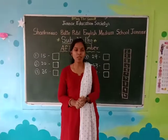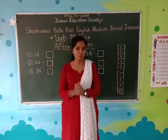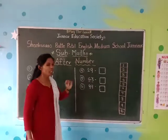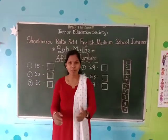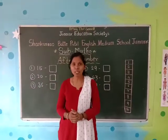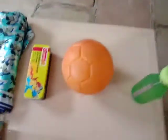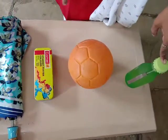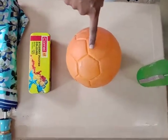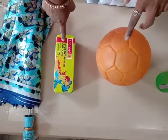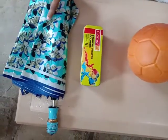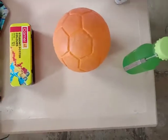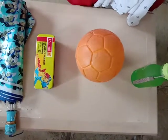In math today we will learn about after numbers. But before that I will show you some things. See here — I have arranged some things: this is a water bottle, this is a ball, your favorite toy, and this is water color, and here is an umbrella. These all things I have arranged in a sequence.